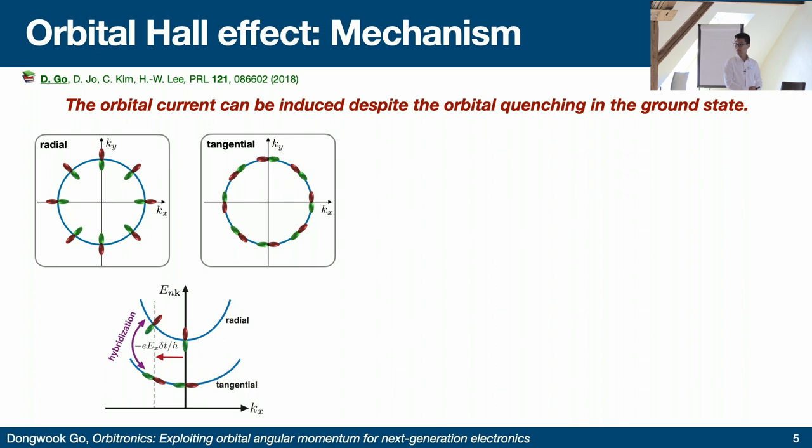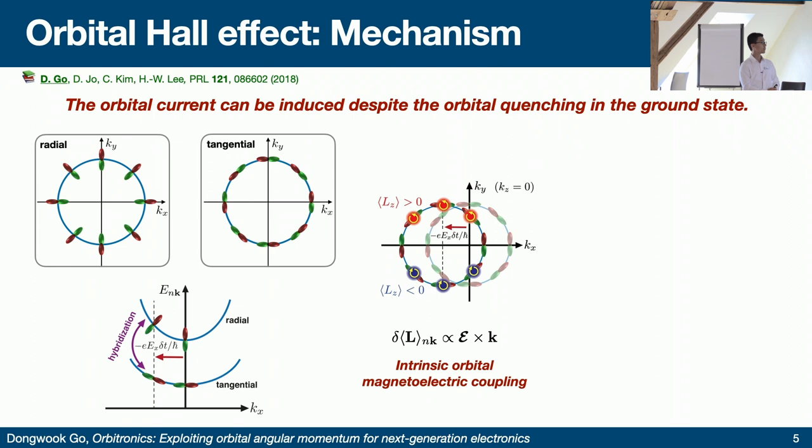When there is an external perturbation — an external electric field — we can induce a hybridization between these different textures, because crystal momentum is coupled to the orbital texture. Therefore, by shifting the momentum k via the electric field, you can induce a mixing of different orbital textures, and at the end you can induce orbital angular momentum for each Bloch state.